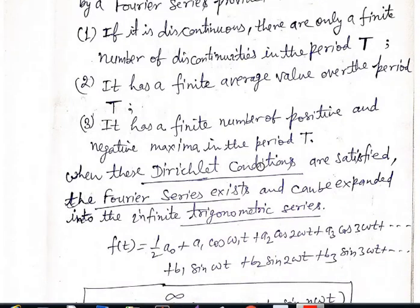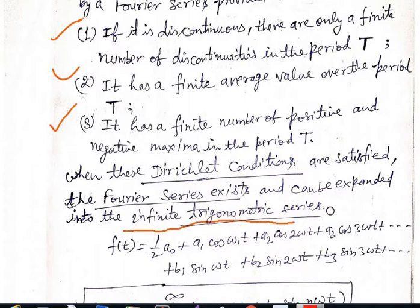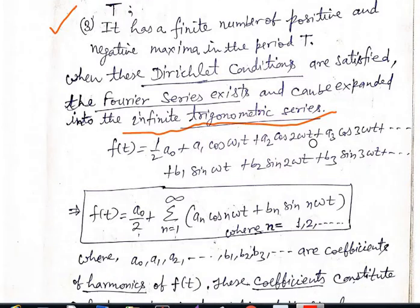If any periodic waveform follows these three Dirichlet conditions, it can be expanded in terms of an infinite trigonometric series and written as: f(t) = (a₀/2) + a₁cos(ω₁t) + a₂cos(2ωt) + a₃cos(3ωt) + ... + b₁sin(ω₀t) + b₂sin(2ωt) + b₃sin(3ωt) + ... This can be written compactly as (a₀/2) plus the sum from n=1 to infinity of [aₙcos(nω₀t) + bₙsin(nω₀t)].